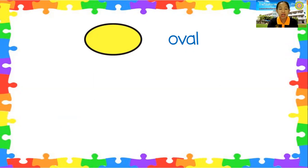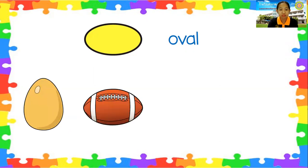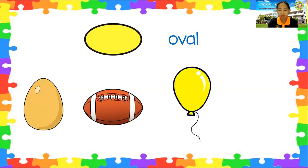Now let's name the objects that are oval in shape. You follow after teacher: egg, football, balloon, mirror. Now I will give you a moment to name them again. Very good.